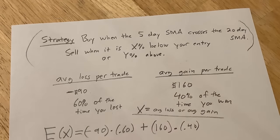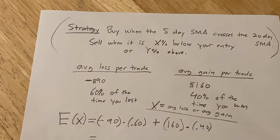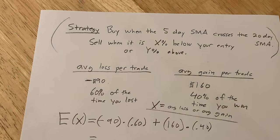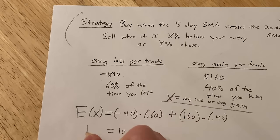And I haven't done this, I'm just making this up on the spot. I just thought I would make this video. So I'm just going to type this into my calculator: negative 90 times 0.60 plus 160 times 0.4. So this is 10. So you have an expected value of 10.